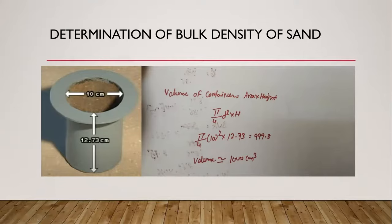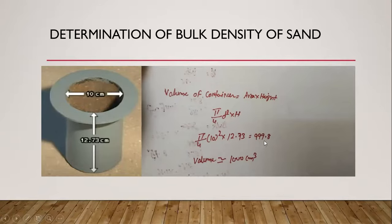Before starting the experiment, we shall determine the volume of the calibrating container. Its internal diameter is 10 cm and height is 12.73 cm. Volume is area into height — area of cylinder is π/4 × d² × height. By doing the calculation you will get 999.8, so the volume is approximately equal to 1000 cm³.